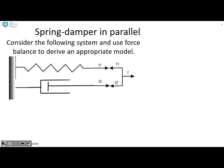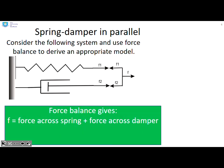What about a spring damper in parallel? Well, we can do a force balance here and we can write that the force f that's applied has got to give you the force across the spring, that's f1, plus the force across the damper, that's f2. And therefore the equation I get is f equals f1 plus f2.